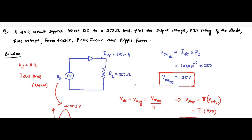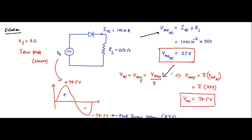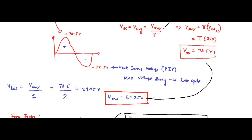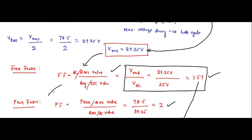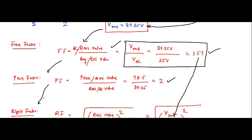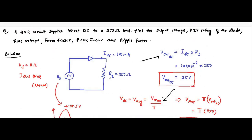So here we have determined the peak factor, the form factor which is the RMS value by the DC value ratio, and the ripple factor which is RMS by average whole squared minus 1, root over, equal to 1.21. This is a very important question from the point of view that you have to remember the formulas. Given IDC and RL, we determined VDC; from VDC we got Vmax; from Vmax we got VRMS; and from VRMS and VDC we got the form factor, peak factor, and ripple factor. Everything is connected like links of a chain — you have to remember the formulas and know how these parameters are interrelated.